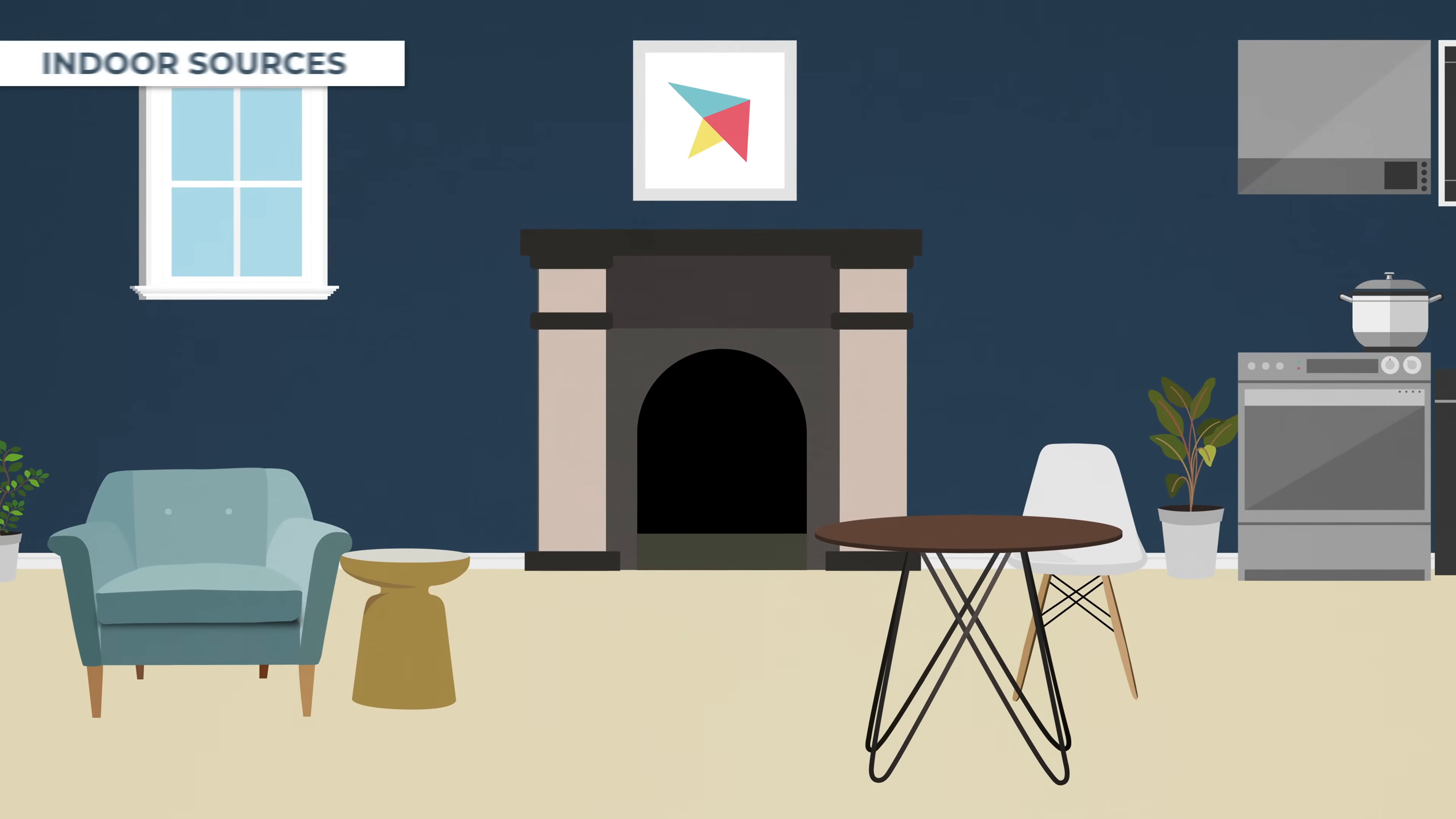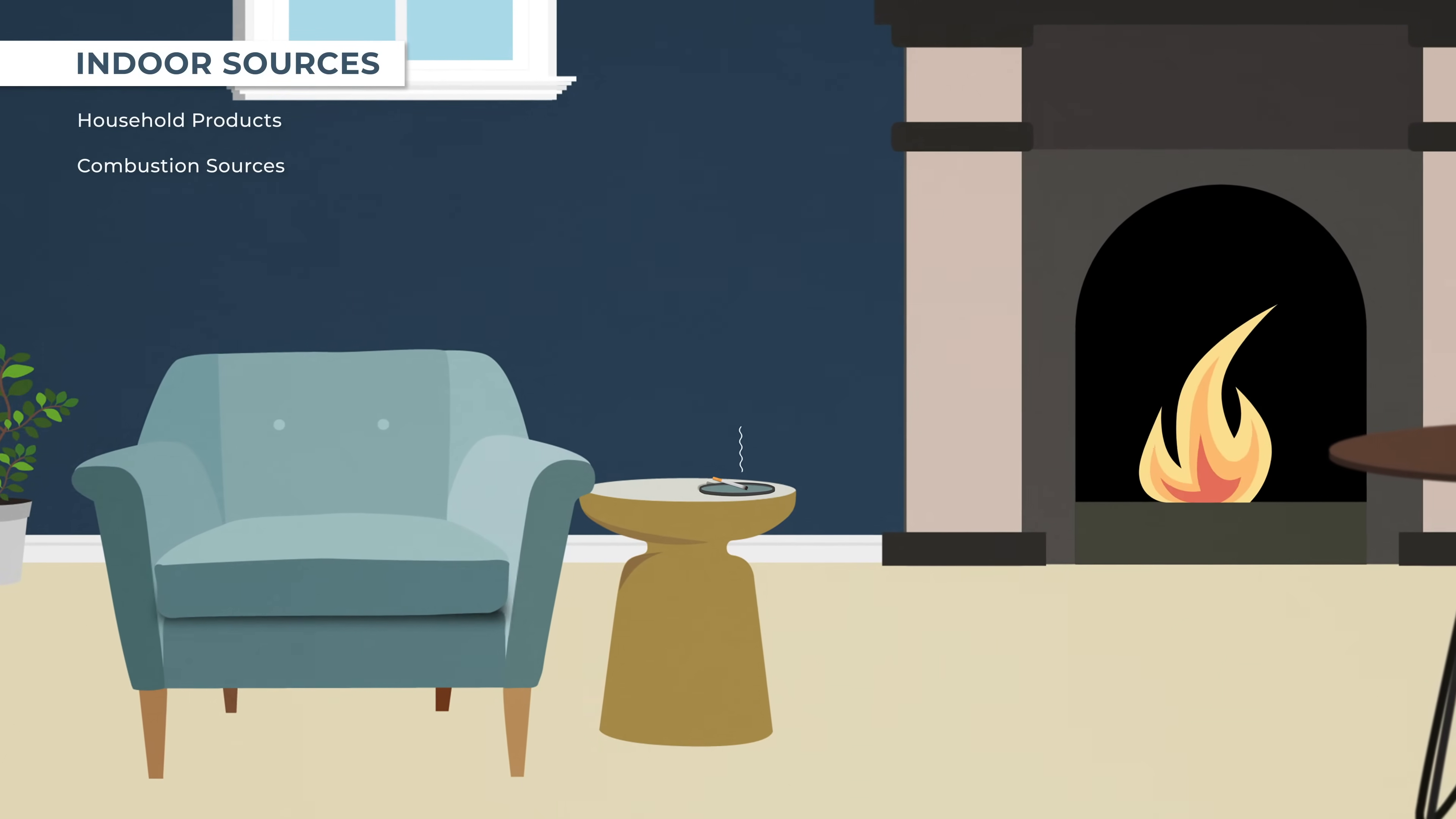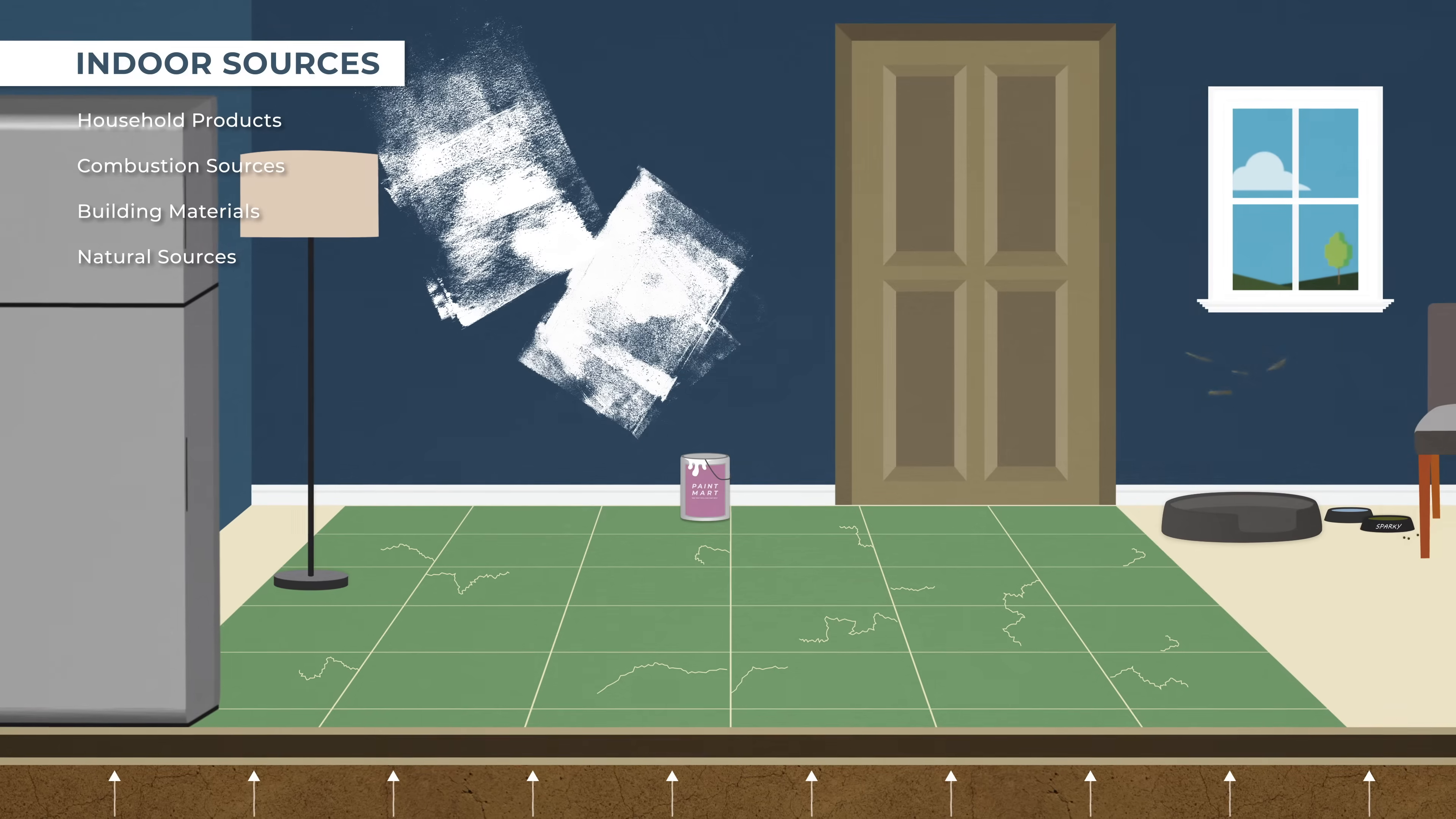Indoor sources include household products like cleaning supplies, insecticides, and paints; combustion sources like tobacco, fireplaces, and cooking appliances that let out carbon monoxide; old building materials and off-gassing chemicals from new building materials; and natural sources such as radon, pet dander, and mold.